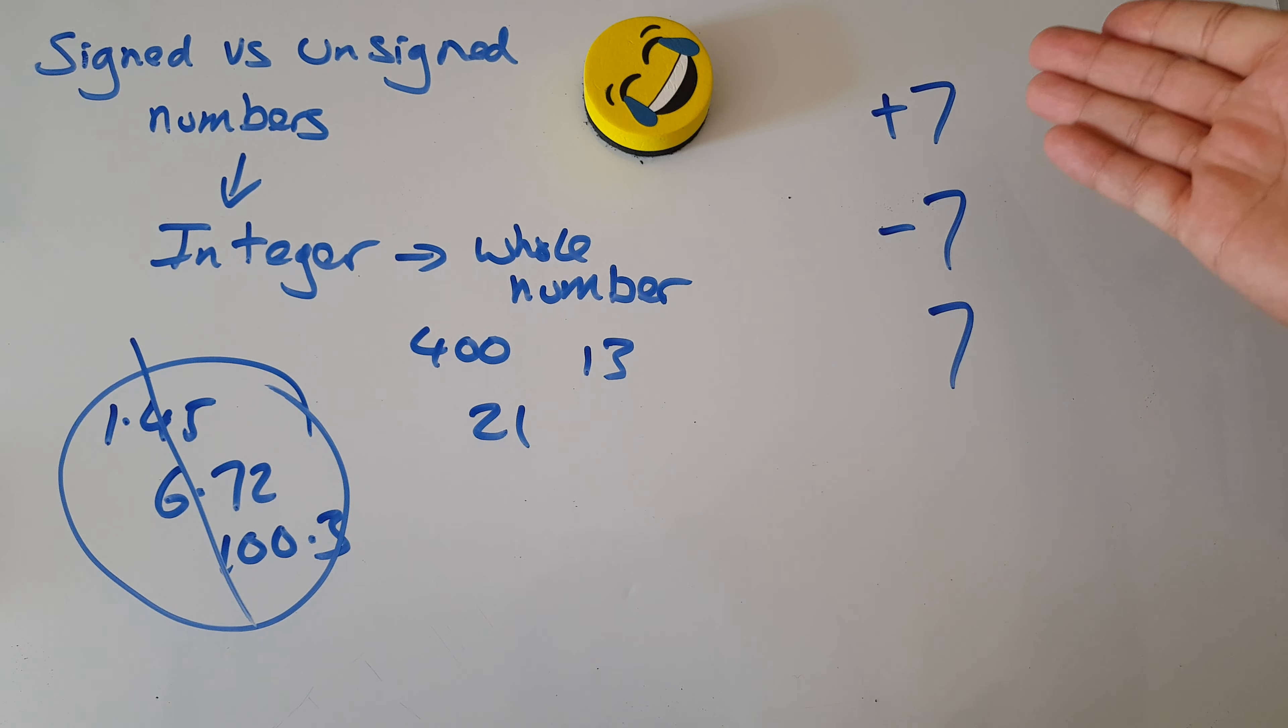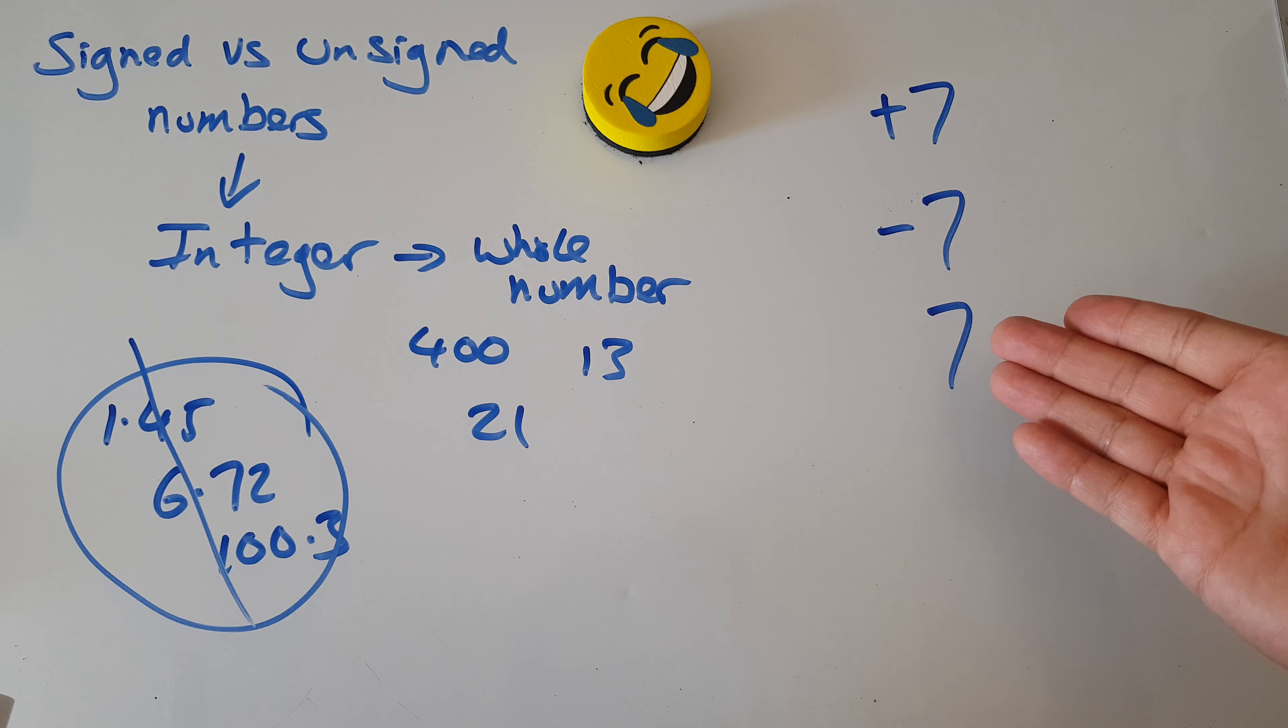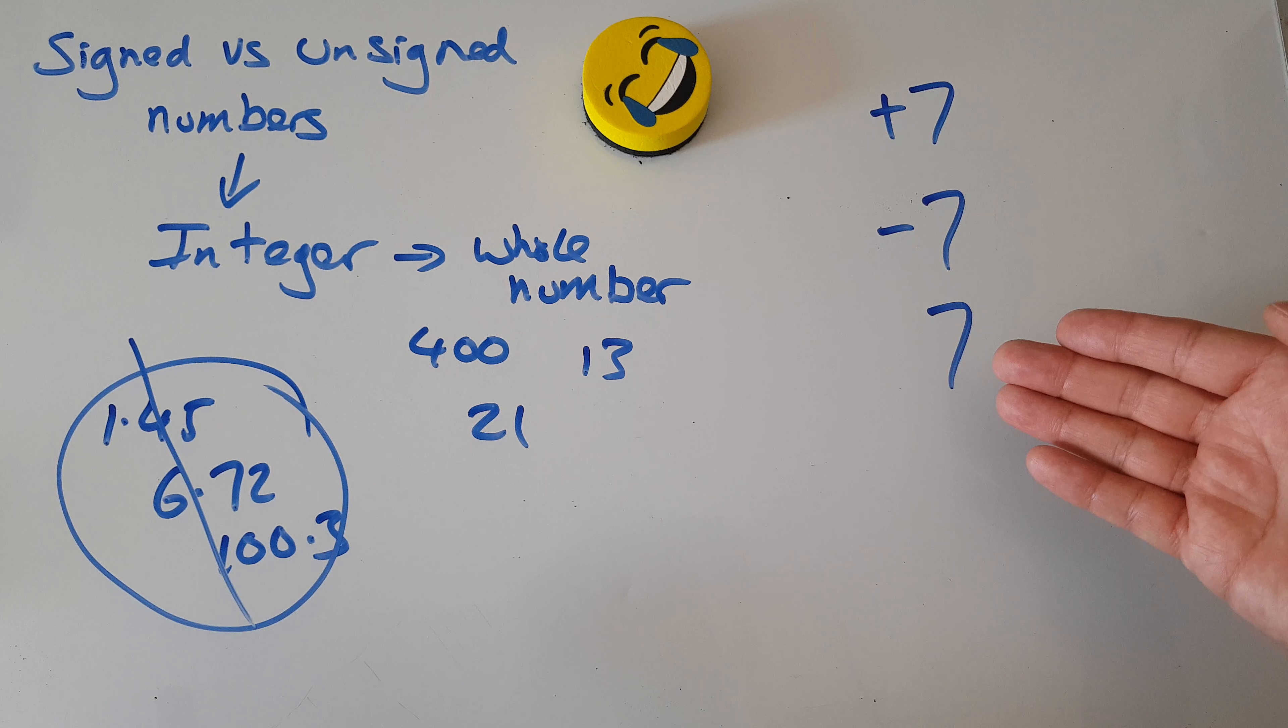Now how many of these integers here have a sign? Well the answer is that one has a sign and that one has a sign, plus and minus, that one does not. So how many of these are unsigned? Well the answer is this one, clearly there's no sign.